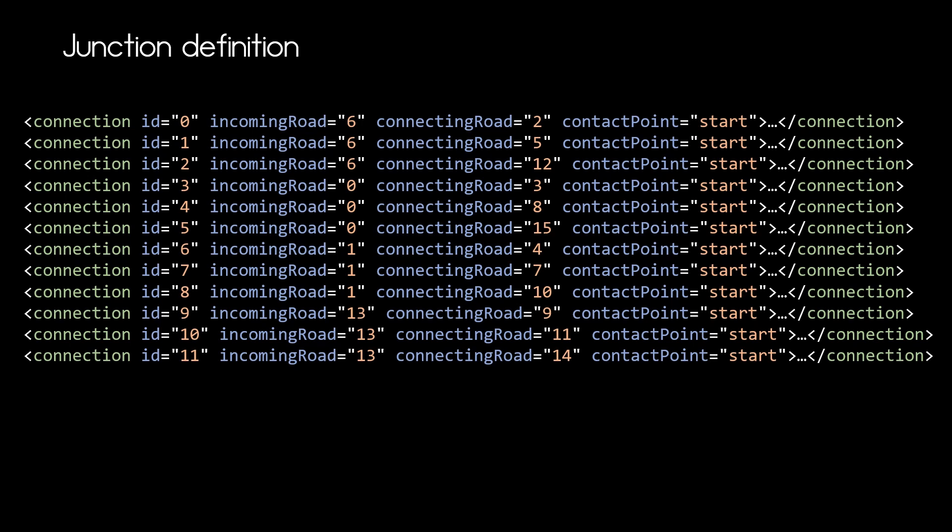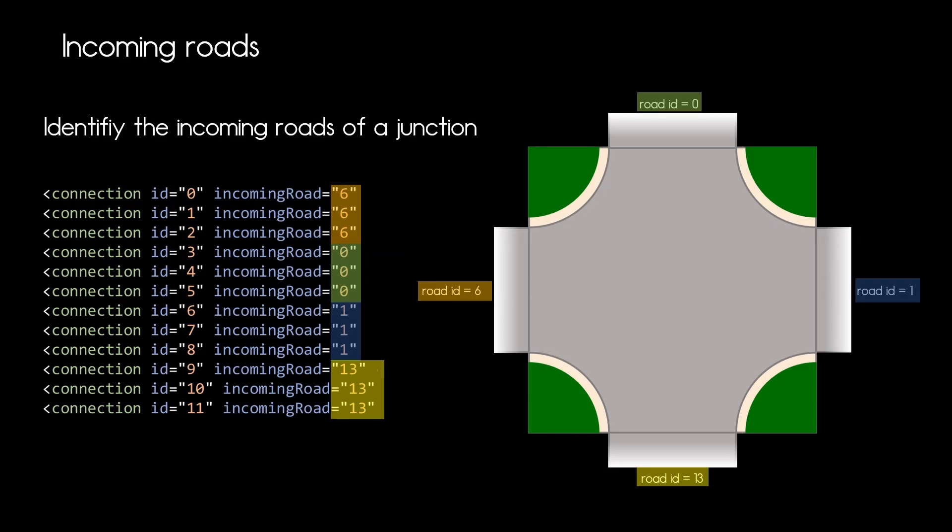And the contact point. That indicates if the incoming road connects to the connecting road at its end or at its beginning. In our example today all incoming roads connect to the beginning of each connecting road. Let us identify the incoming roads according to the connections. Here we have the IDs 6, 0, 1 and 13.